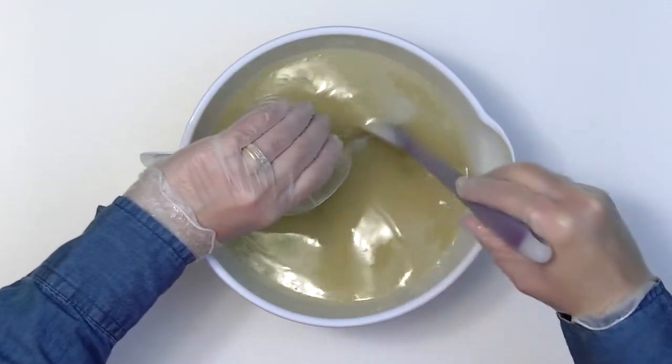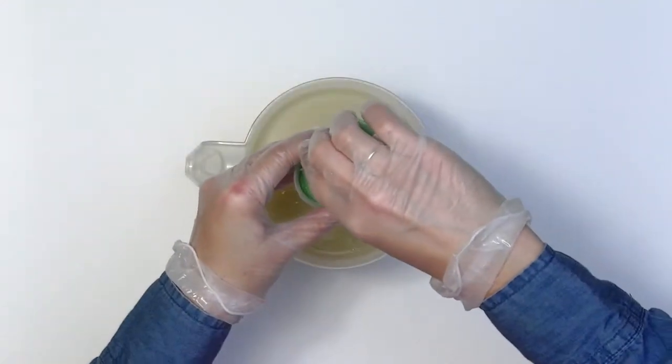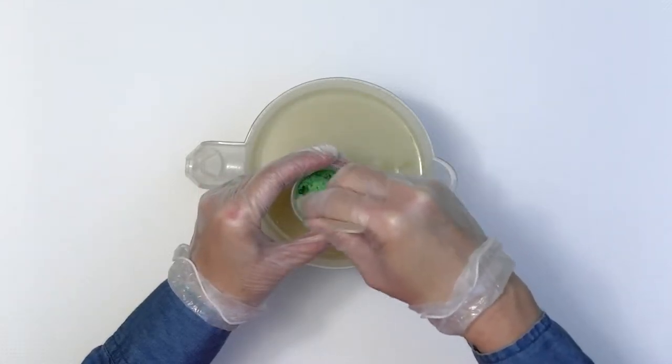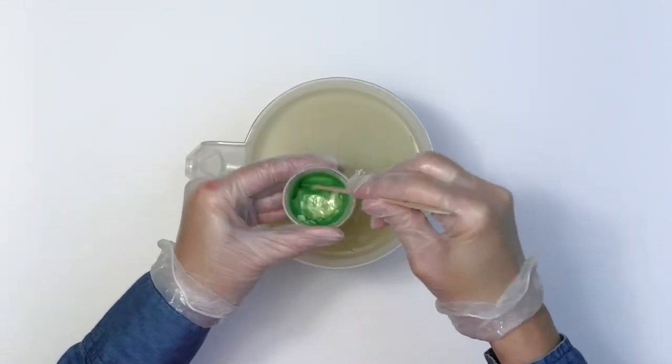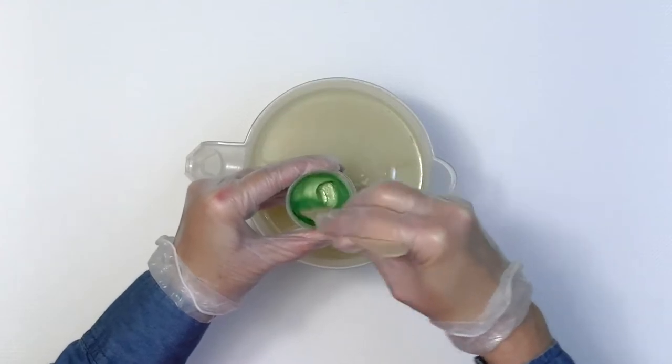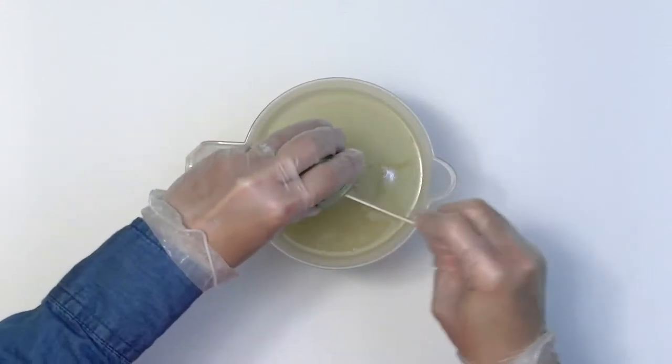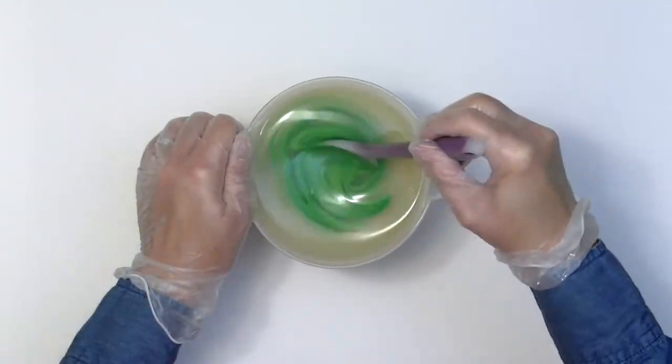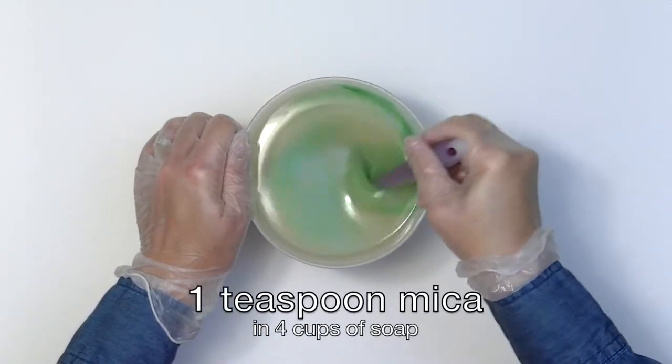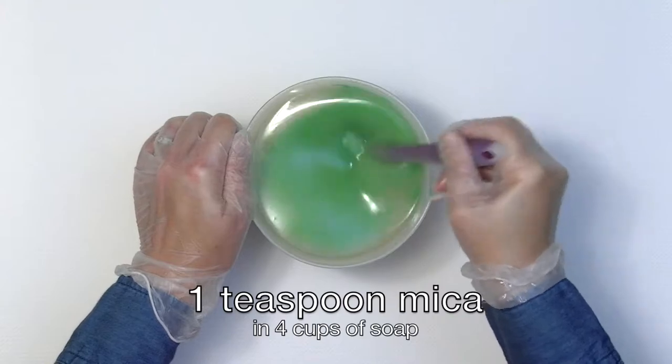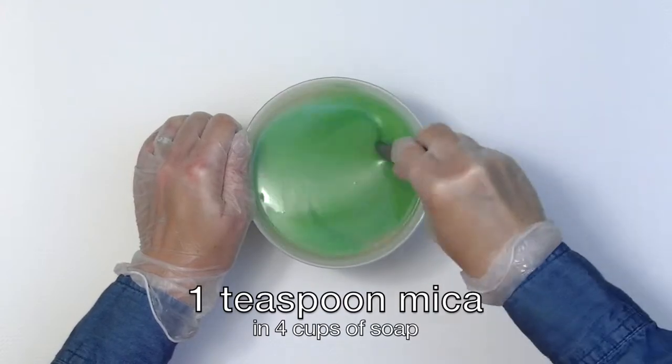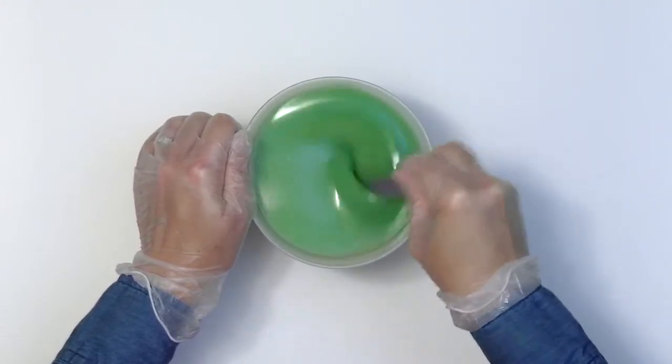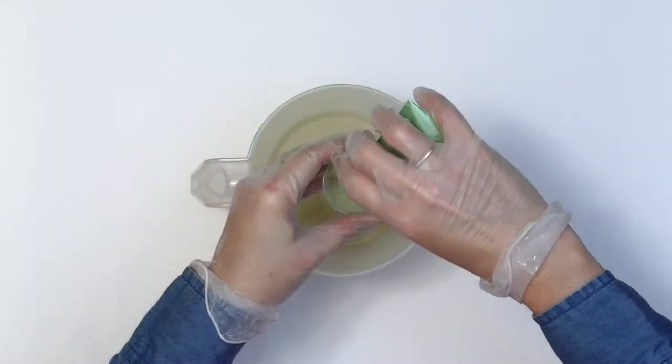I'll use a sample size of the Apple Green mica, which is one teaspoon. I mix it in a little reserved oil. I'm adding it to four cups of soap to get a light base color.